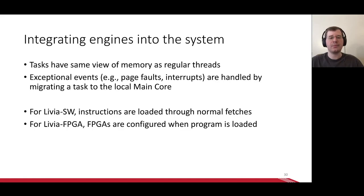Now, in terms of how these engines interact with the rest of the system, engines generally provide tasks with the same view of memory as regular threads. This means they experience all the same data races and have all the same synchronization primitives to deal with them. In order to simplify the engines, we handle exceptional events by migrating the task to the local main core, which means we can use all of the existing machinery to handle these rare events. In terms of configuring the engines, on the in-order core side, instructions are loaded through normal fetches and this cost is amortized over many task executions. On the FPGA side, we currently model a system where the FPGAs are configured when the programs are loaded, and also amortized over many task executions. This is okay because our tasks are so small that even a tiny FPGA can support 10 co-running applications. There still is some interesting work to be done in system integration. We'll come back to this when we discuss future work.